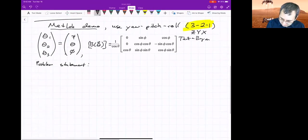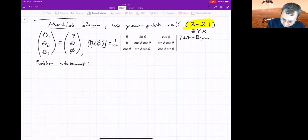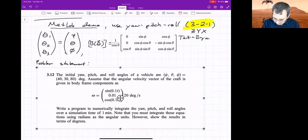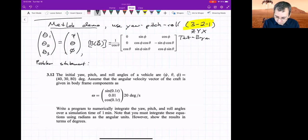Maybe I'll give you a problem statement, just like one of the problems that's in the back of that chapter. To demonstrate this, we're going to use problem 3.12. So here's problem 3.12. It says the initial Yaw, Pitch, and Roll angles are 40, 30, and 80 degrees. And we're going to assume a form for the angular velocity.